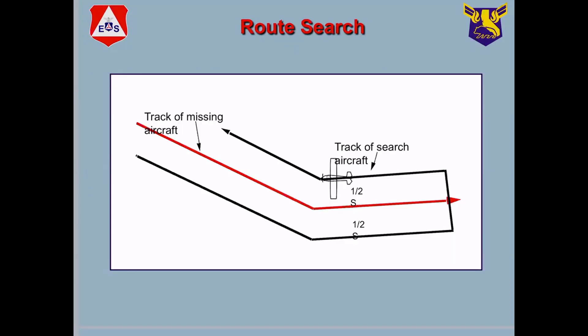So the route search is basically probably the very first search that's going to be done. Somebody is flying from point A to point B, filed a flight plan, we know what their route is, they disappear. So there's a high probability that we can assume that he is flying his route, and the mishap occurred along that route.